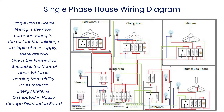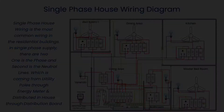Single phase wiring is the most common wiring in residential buildings. In single phase there are two lines — one is phase and the second one is the neutral line, which is coming from utility poles through an energy meter and distributed in-house through a distribution board.